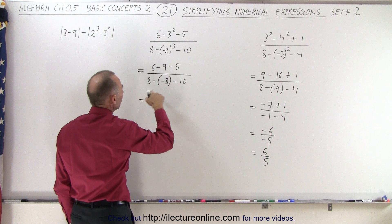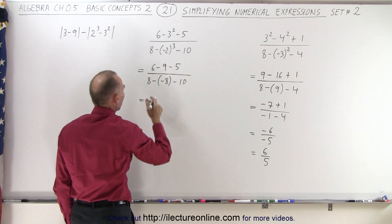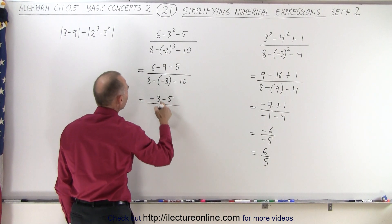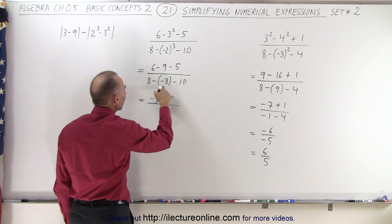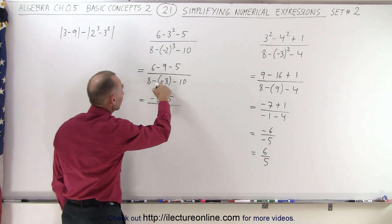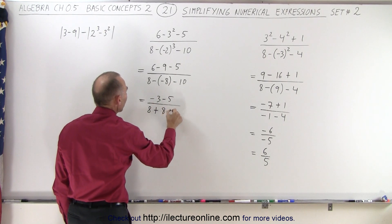Simplifying some more, we have two subtractions. We have to do the left one first before we do the right one. So 6 minus 9 is a minus 3 minus 5 divided by 8 minus a minus 8. I'm going to use the distributive property to distribute the negative onto this negative 8. So this becomes 8 plus 8 minus 10.